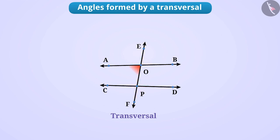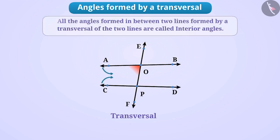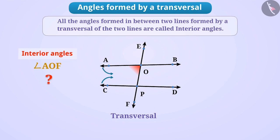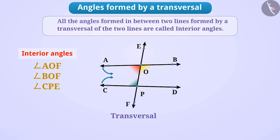Here you can see that angle AOF is situated in between the lines AB and CD. All the angles formed between two lines by a transversal of the two lines are called interior angles. Therefore, angle AOF is an interior angle. Similarly, angle BOF, angle CPE and angle DPE are also situated in between the two lines AB and CD. Therefore, they are also interior angles.